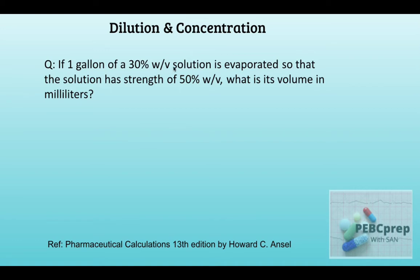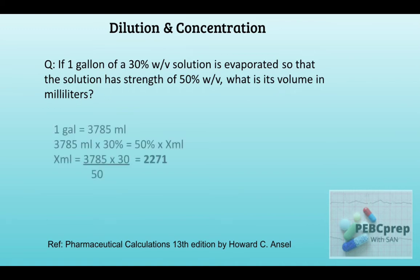Next: if one gallon of a 30 percent weight-by-volume solution is evaporated so that the solution has a strength of 50 percent weight-by-volume, what is its volume in milliliters? One gallon equals 3785 milliliters. When we put values into our formula, we get 2271 milliliters.